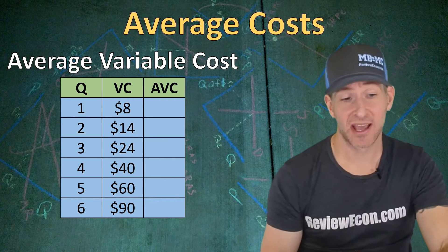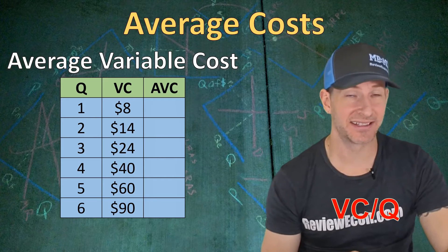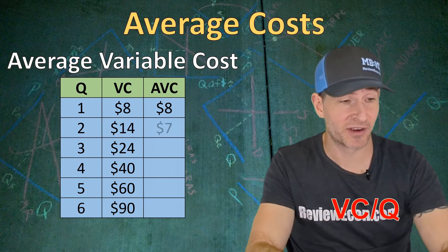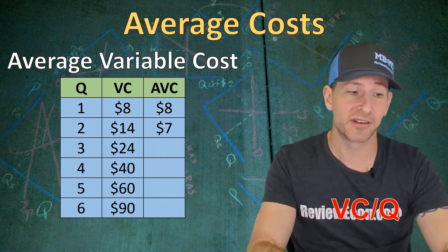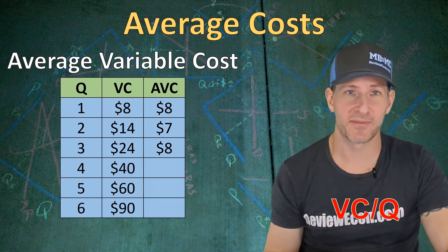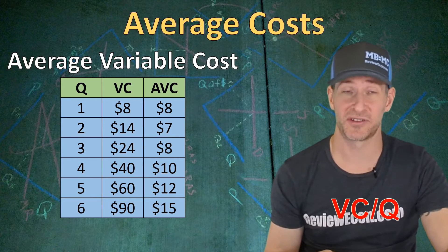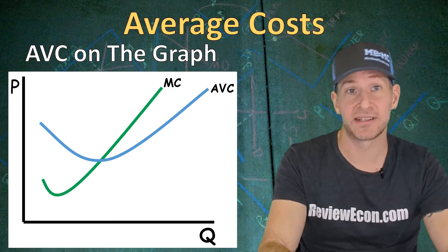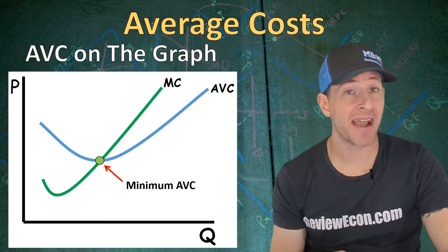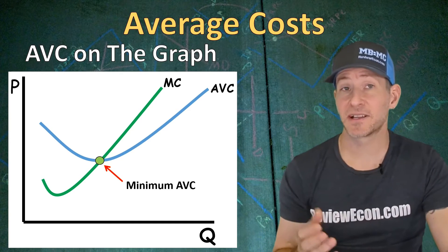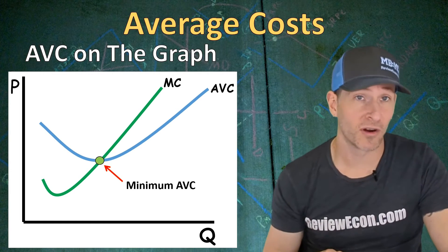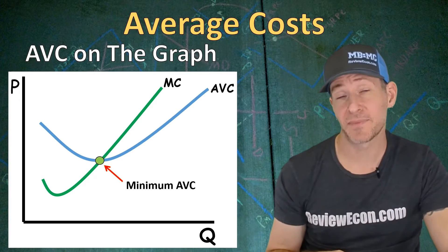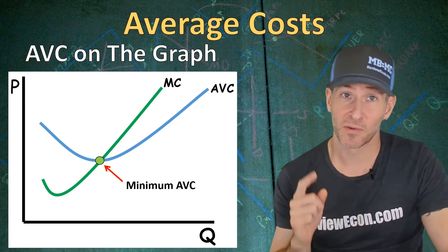Next we're going to look at average variable cost. The average of anything is that thing divided by the quantity. So it's the variable cost divided by the quantity produced. At one unit, the average variable cost is $8. At two units, it's $7 — that's $14 divided by two. At three units, it's $24 divided by three, which is $8. When graphing average variable cost, it decreases until it intersects the marginal cost curve, then increases. The minimum of the average variable cost curve intersects the marginal cost curve because whenever marginal cost is below the average, it pulls the average down, and as soon as marginal cost is above the average, it lifts the average up.